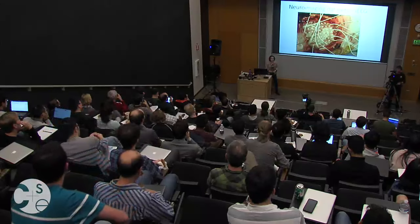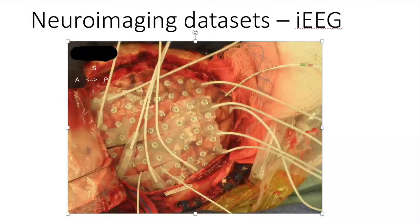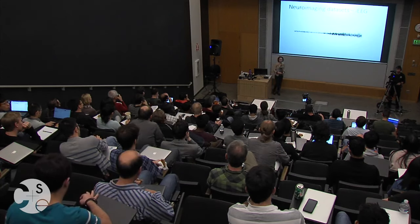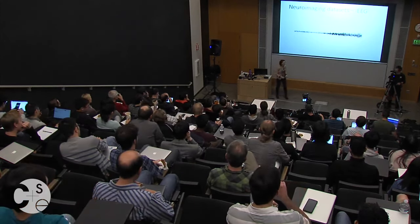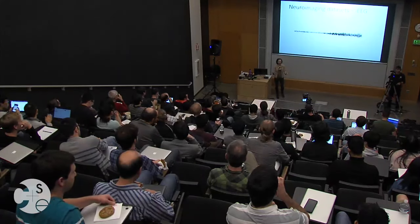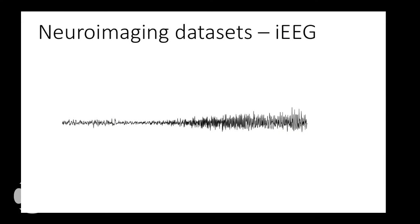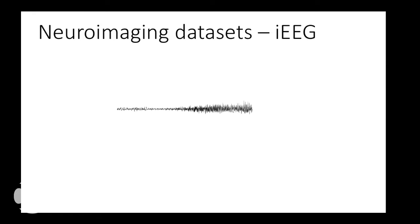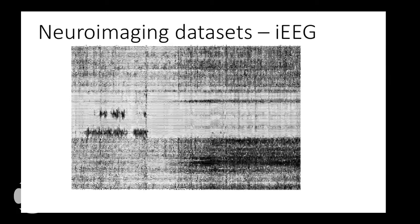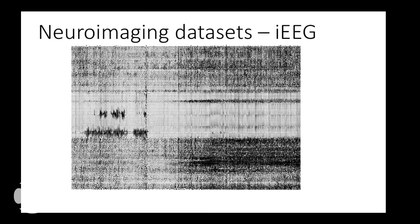Another dataset we've looked at quite a lot is intracranial EEG, where electrodes are embedded in the brain. Here the idea is that electrodes are actually implanted in the brain, and not only do you have one channel of recording, but a whole collection of channels providing measurements of brain activity over time. There's a really rich set of information about the relationships between the different channels of activity.